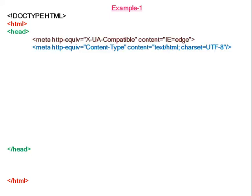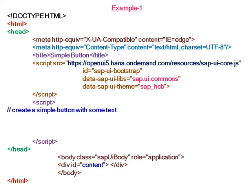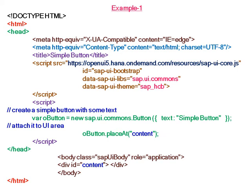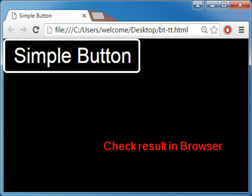In Example 1, we will create a simple button. The theme we are taking is High Contrast Black. We will create a new button with text 'Simple Button' and attach this button to the div element. Now check the result in the browser to see a simple button getting created.